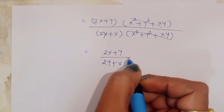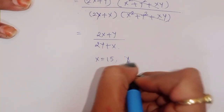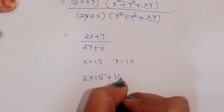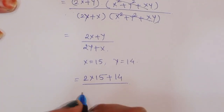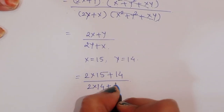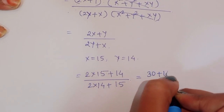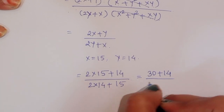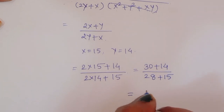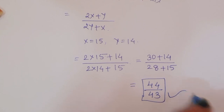Since x equals 15 and y equals 14: numerator = 2(15) + 14 = 30 + 14 = 44, and denominator = 2(14) + 15 = 28 + 15 = 43. Therefore the answer is 44/43. Thank you.